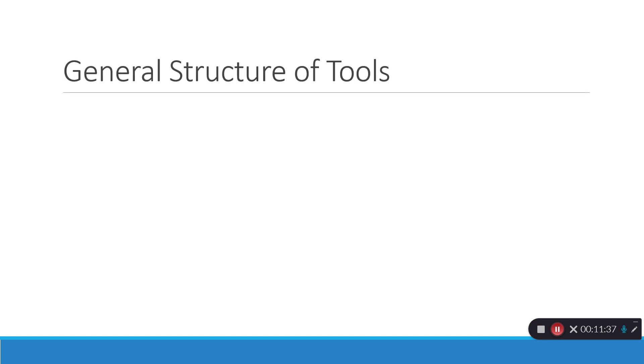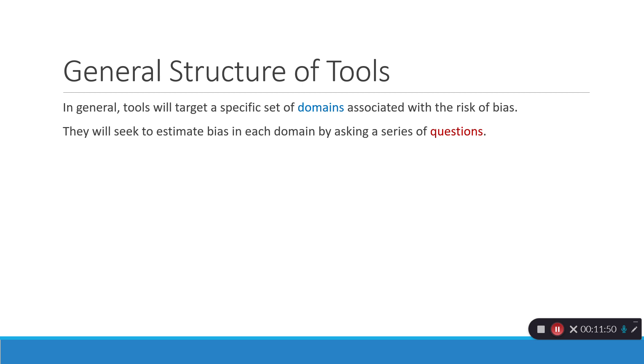Now, I'm not going to talk in this brief little intro about specific tools. You can find all kinds of tools out there and resources to support them. But I'm going to give you a sense of general tool components. And what do I mean by that? Just the general structure of what these good tools look like. In general, tools will target specific domains associated with risk of bias or internal validity. They will seek to estimate bias within each domain by asking a series of questions. It's not usually just one question per domain. It may be multiple. And in good tools, you'll often see a few questions for each domain.